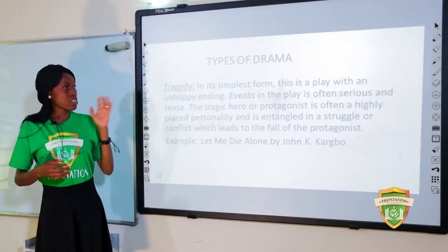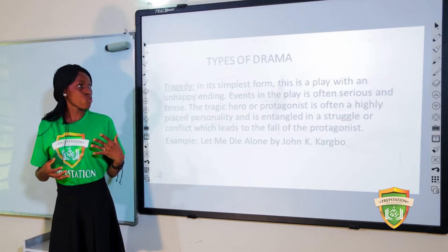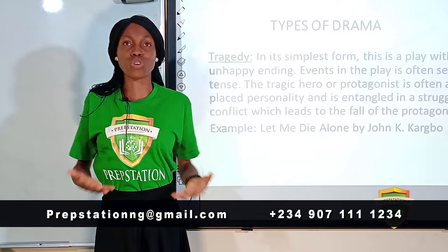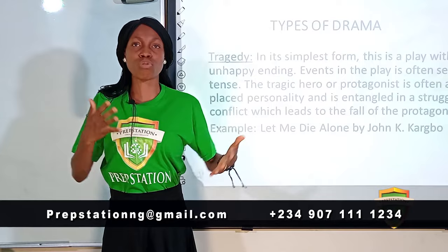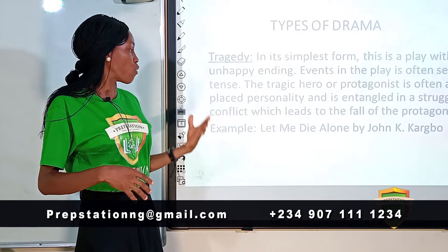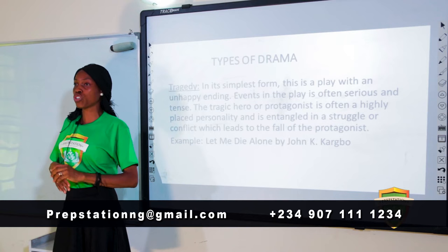The first type of drama is tragedy. Tragedy is a play with an unhappy ending. Events are usually serious — nothing trivial about a tragic work. Characters are serious, and the protagonist is the focal person in the play, someone loved by all and driven by a certain ambition. An example of a tragedy is the play Let Me Die Alone by John K. Cabo.